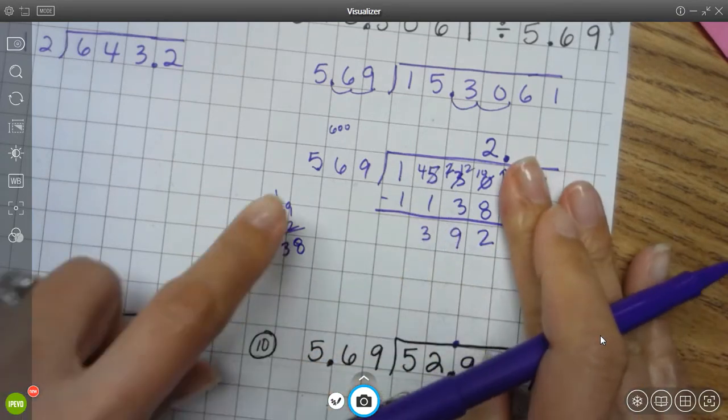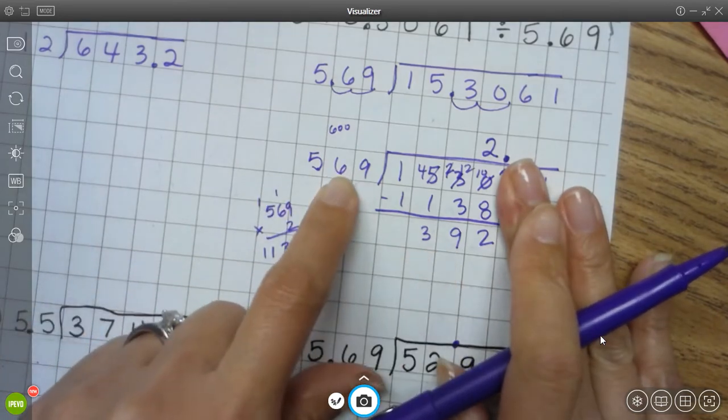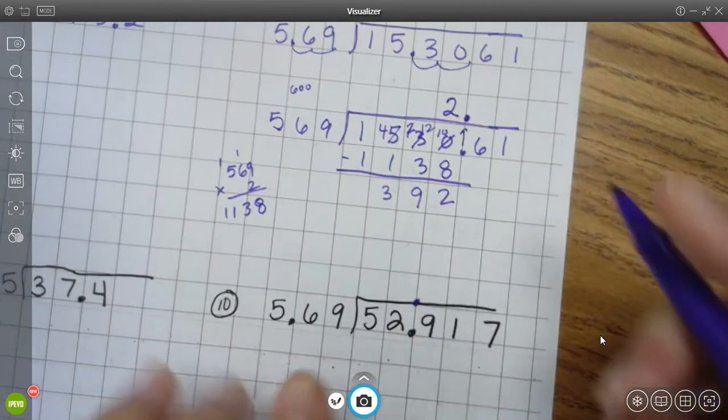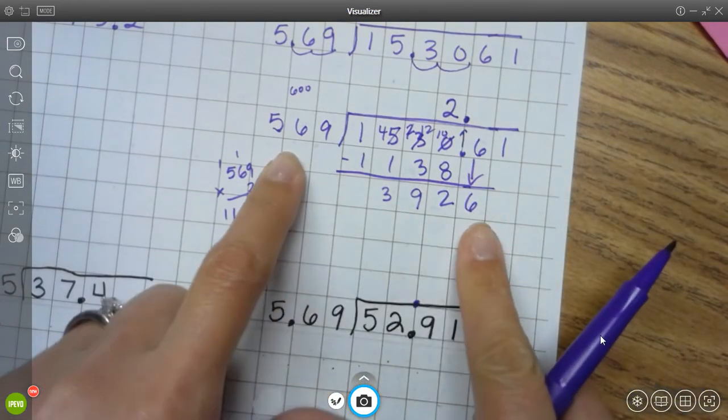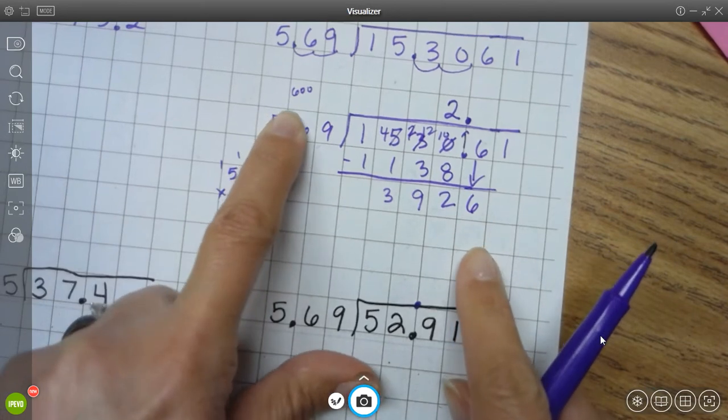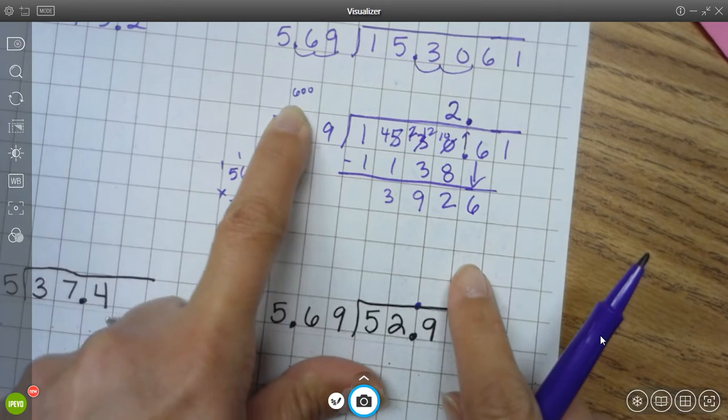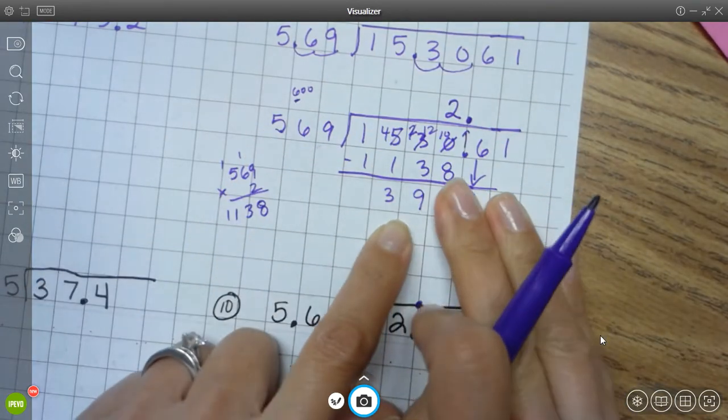Okay, so I'm going to do a check. Is 392 smaller than 569? It is. I'm going to bring down my next number, which is a 6. All right, so I'm going to go back, and I have to think mental math, compatible numbers. I'm thinking this number. I'm going to round it up to 600, and I'm thinking about this number 6, and I'm looking at these first two numbers.